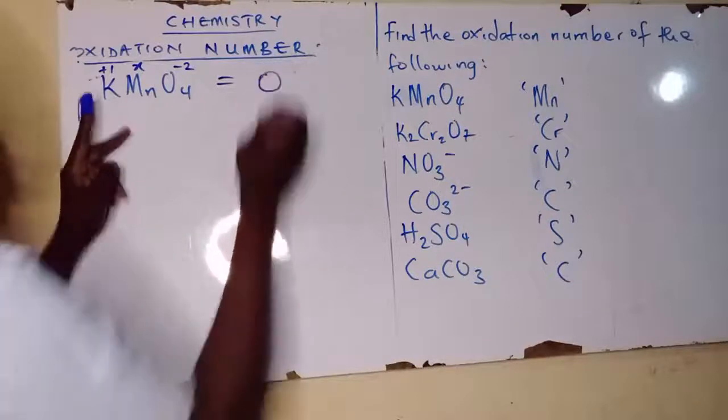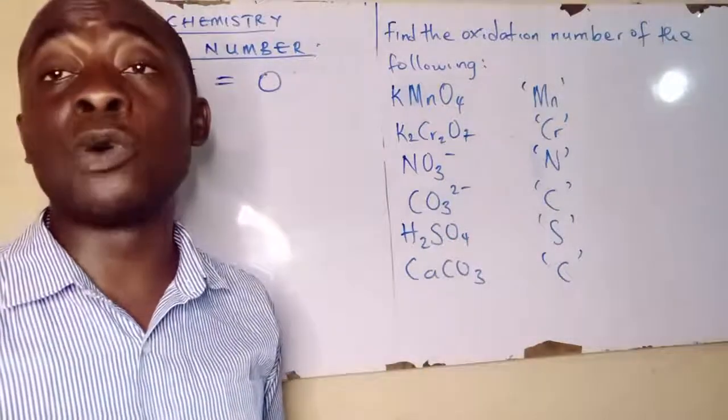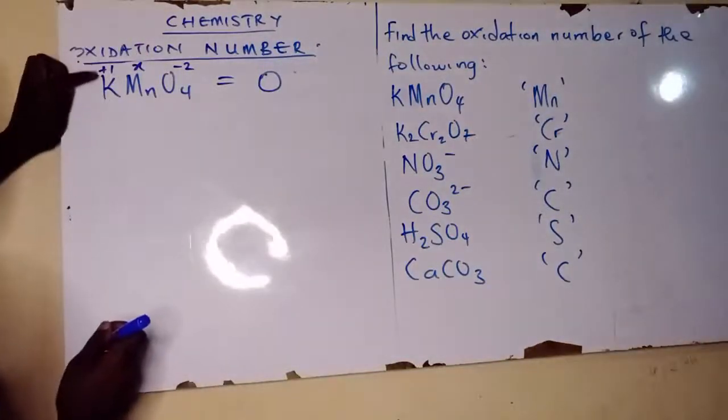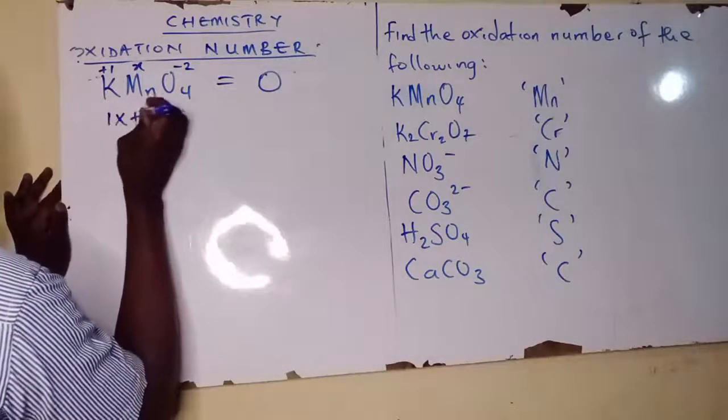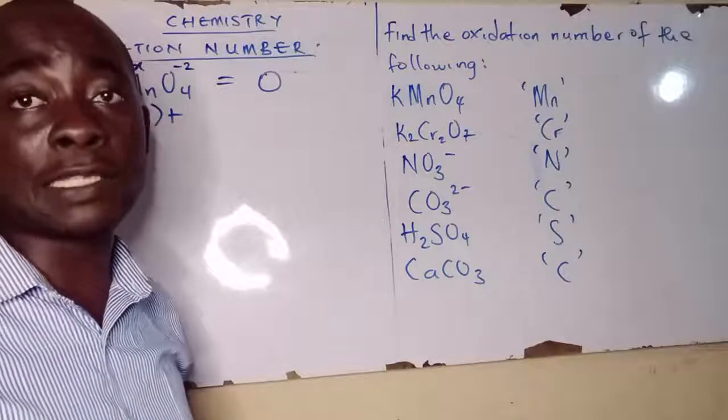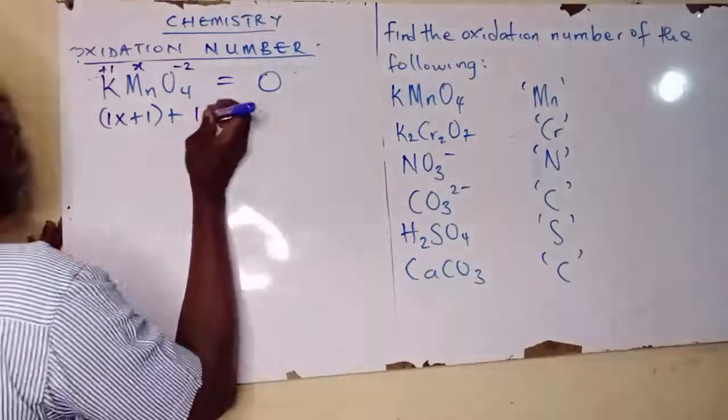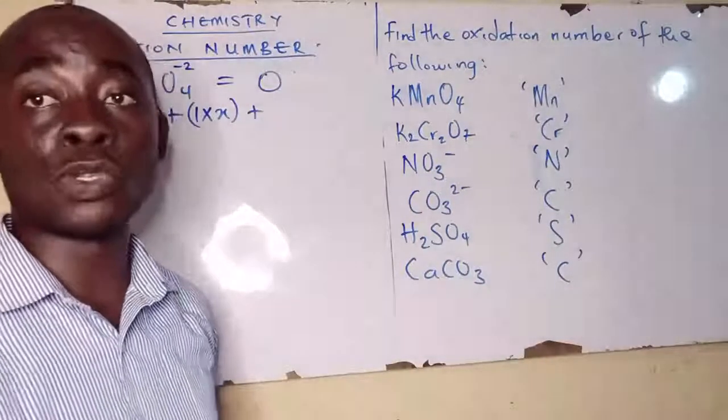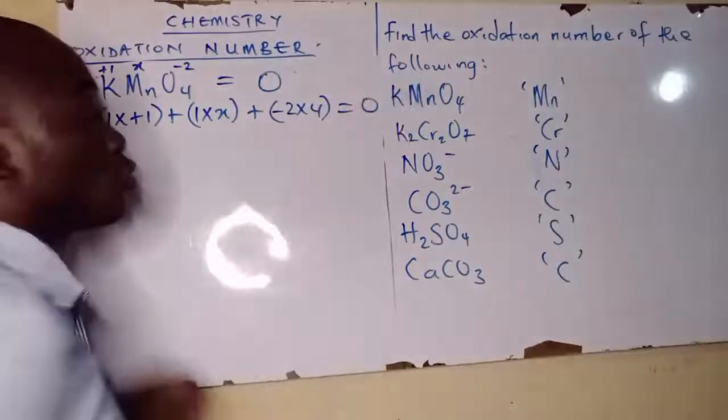Everything must equal to zero. Potassium is 1 times plus 1, manganese is 1 times x, oxygen equals to minus 2 times 4, everything must be equal to zero.